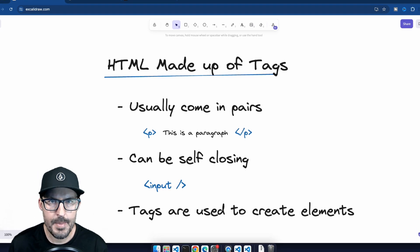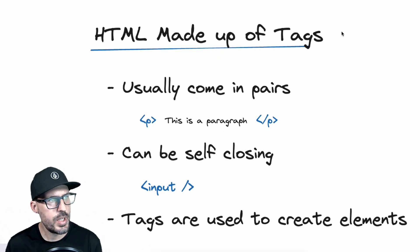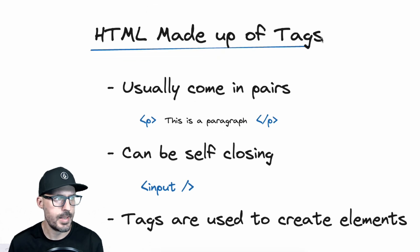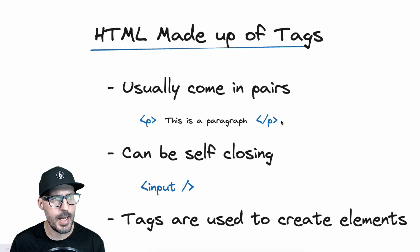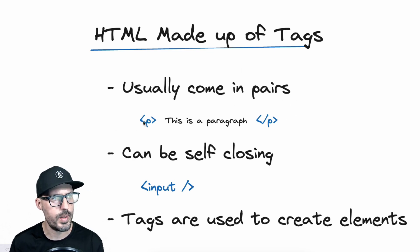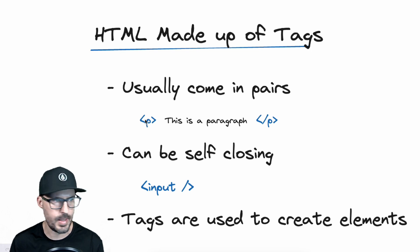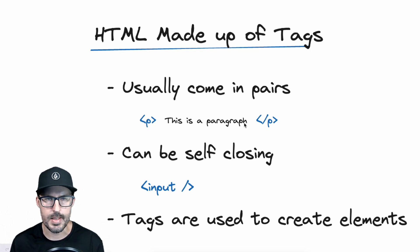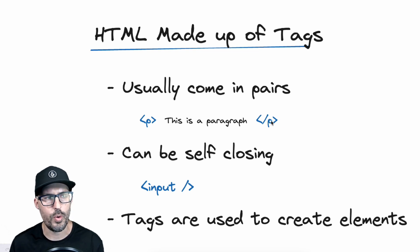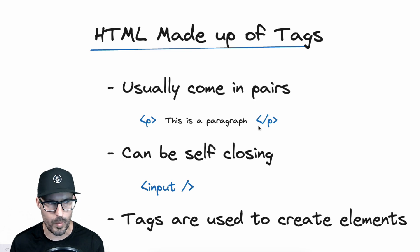To recap some of the information from that video: HTML is made up of tags, and typically there is a start tag and an end tag, thus usually coming in pairs. We can see this example here with the paragraph element. We have an opening P tag, which represents a paragraph in HTML, followed by some text content — 'This is a paragraph' — and then we have a closing P tag, which takes the form of the tag name preceded by a forward slash.